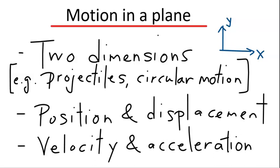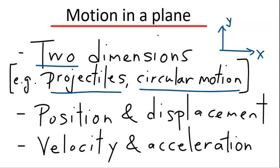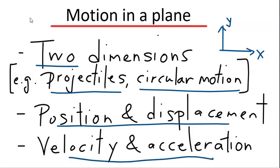In this video, we will talk about motion of an object in a plane, that is, in two dimensions. Examples of motion in two dimensions include projectile motions under the influence of gravity and circular motion. We will explain important concepts such as position and displacement, velocity and acceleration as they apply to motions in two dimensions.